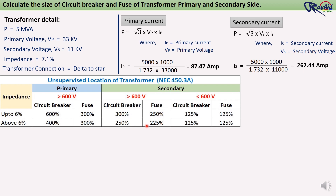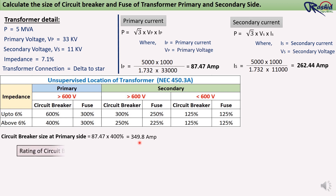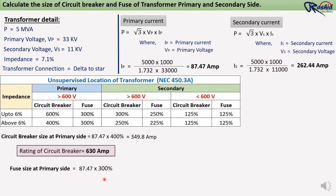For circuit breaker size at the primary side, we multiply 400% by the primary current: 87.47 × 400% = 349.8 ampere. Since 349.8 ampere is not available, we will use a 630 ampere VCB. For fuse size: 87.47 × 300% = 262.41 ampere. Since 262.41 ampere is not available, we go with a 300 ampere fuse.